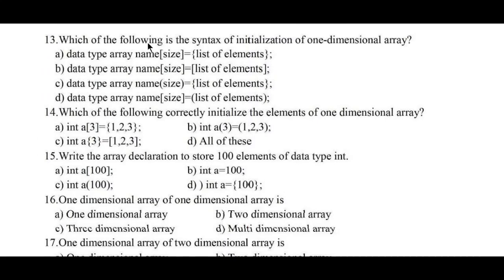Question number thirteen: which of the following is the syntax of initialization of a one-dimensional array? Option a) data type, array name, [size] = {list of elements}. Option c) data type, array name, (size) = (list of elements). Option d) data type, array name, [size] = (list of elements). The correct answer is option a: data type, array name, inside the square bracket size, and inside the curly braces, list of elements.